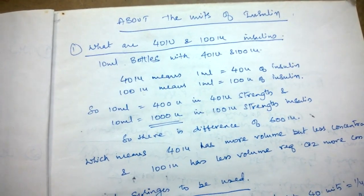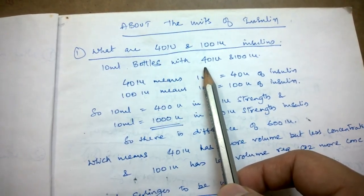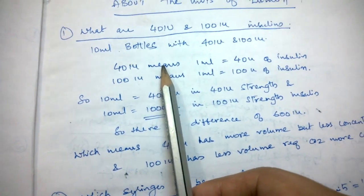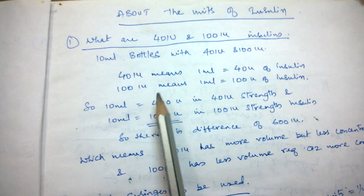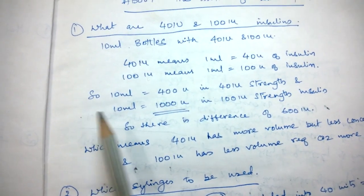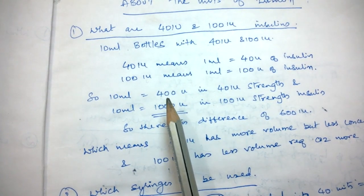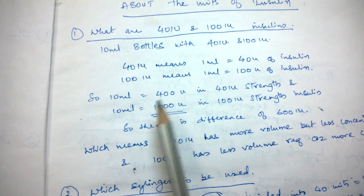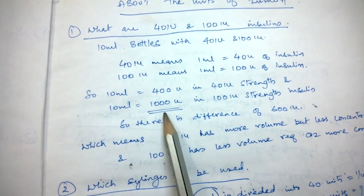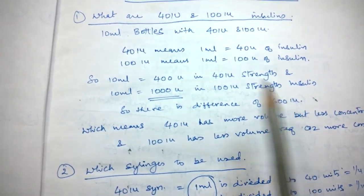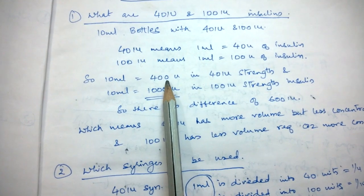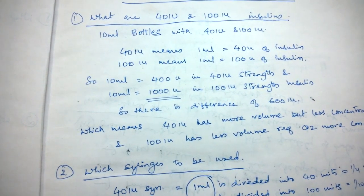Normally we see 10 ml bottles written as 40 international units and 100 international units. When we take 40 international units, that means 1 ml contains 40 units of insulin, and 100 international units means 1 ml contains 100 units. So a 10 ml bottle of 40 IU contains 400 units, whereas 100 IU contains 1000 units — a difference of 600 units. When the shopkeeper says both are the same, never accept that — there is a lot of difference between the two strengths.